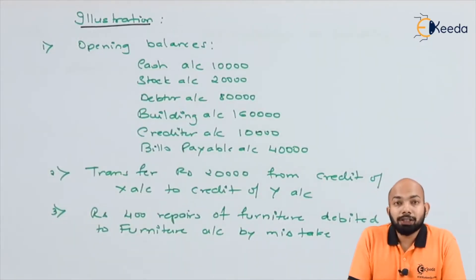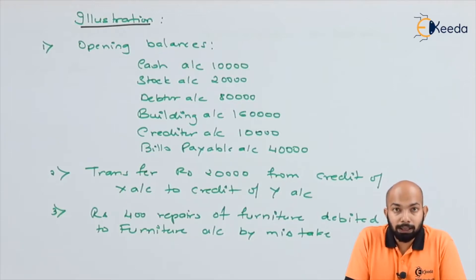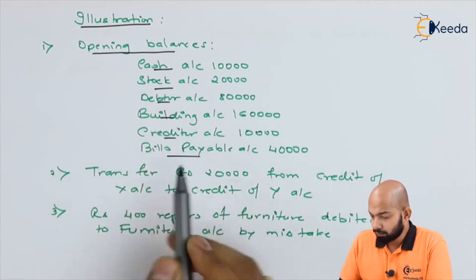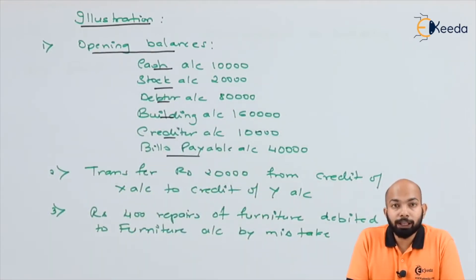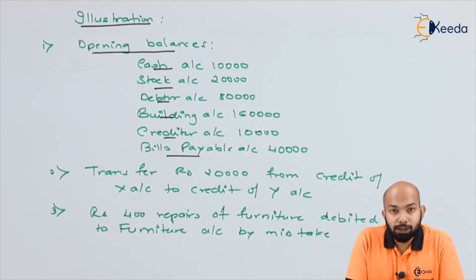The illustration states certain entries that we have to pass, with certain details given. We have been given certain opening balances of cash, debtors, bills payable, creditors, etc. We have to record these entries — let me show you how to record them.